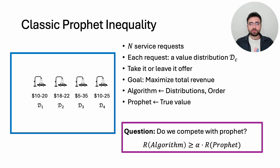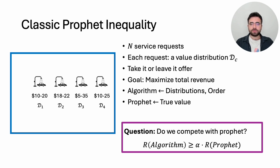We start with a well-known stochastic selection problem called prophet inequality. Consider a hypothetical scenario: an auto shop which can choose whether or not to serve a customer based on how much they are willing to pay and the kind of auto service they want. The shop only offers car washes and can perform at most one wash per day. Every day n customers come, and the auto shop has prior stochastic information — a value distribution D sub c for each customer. Their true valuation is revealed once the customers stop by. The goal is to maximize total revenue by selecting one customer.